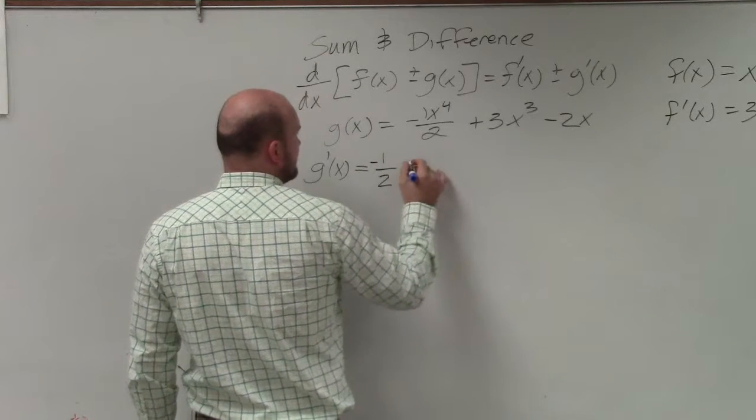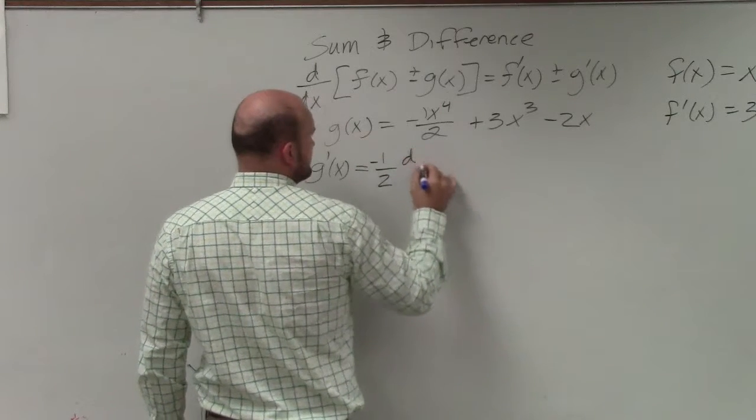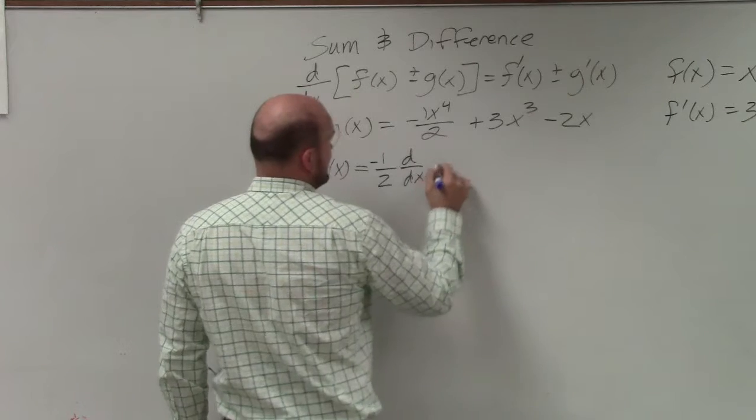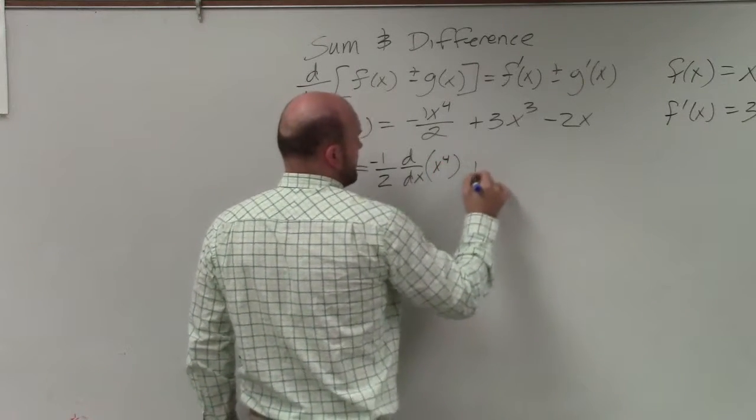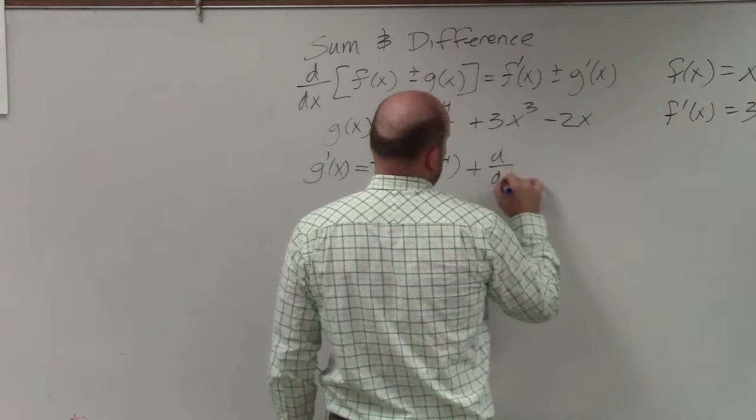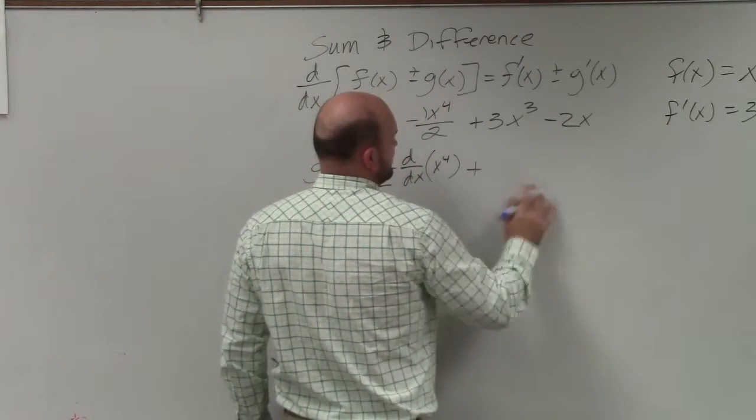I'm sorry, negative one-half over d over dx of my x to the fourth plus d over dx... let's factor out that 3 again.